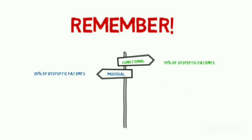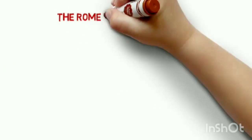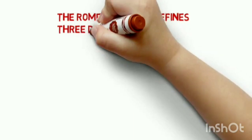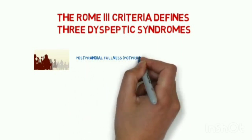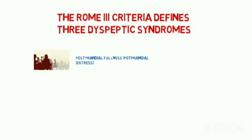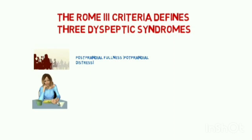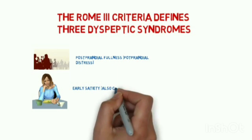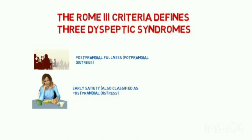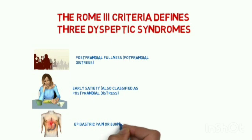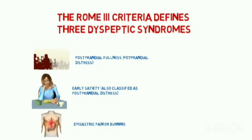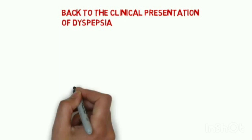The Rome III criteria defines three dyspeptic syndromes: the first is postprandial fullness, classified as postprandial distress syndrome; the second is early satiety, also classified as postprandial distress; and the third is epigastric pain or burning. Back to the clinical presentation of dyspepsia.